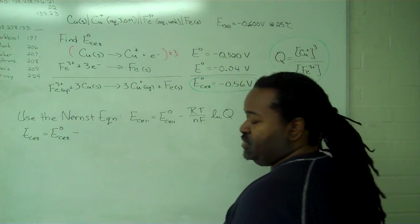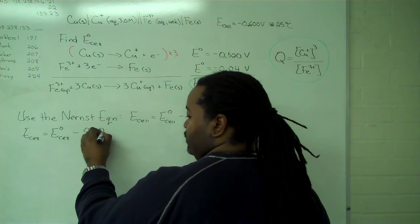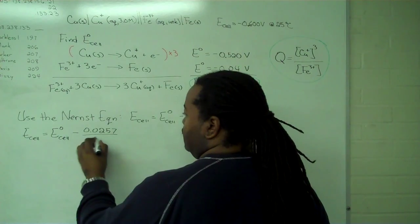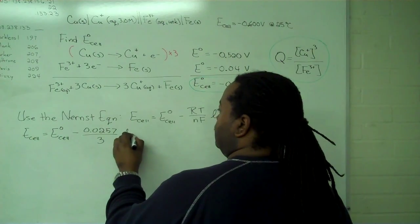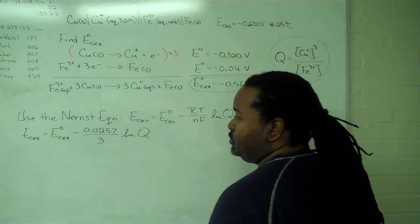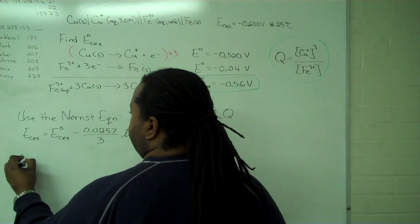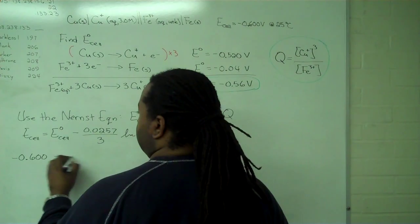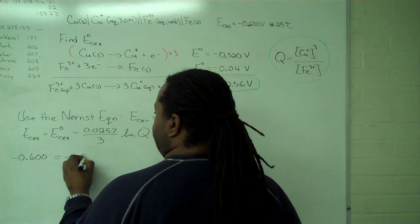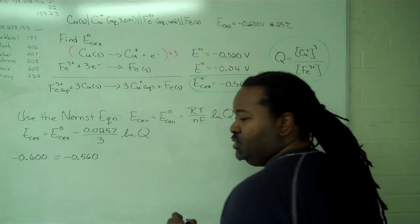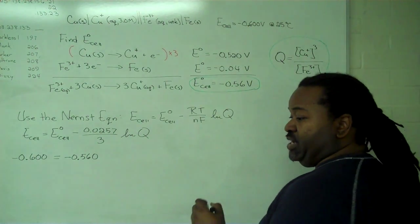And that is E cell equals E cell standard minus 0.0257 divided by the number of electrons, in this case it's 3, ln of Q. So, let's substitute in. Negative 0.6 for E cell. E cell standard is negative 0.56. We have 0.0257 divided by 3.